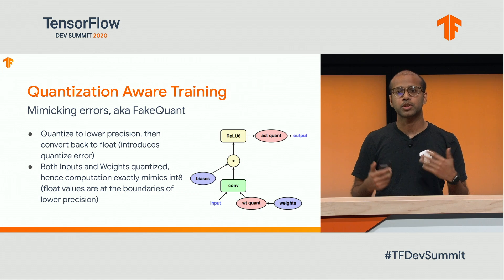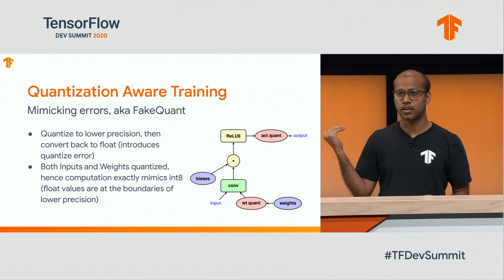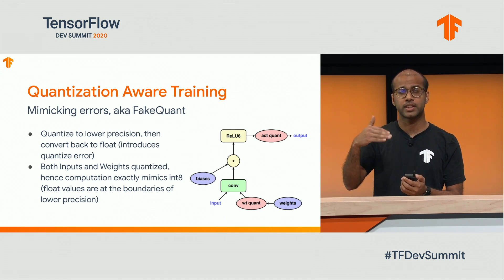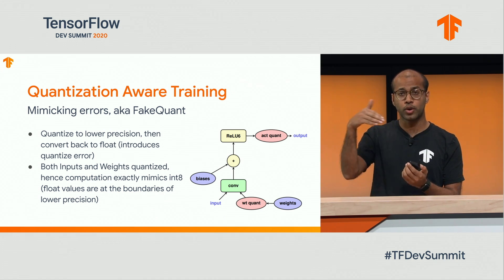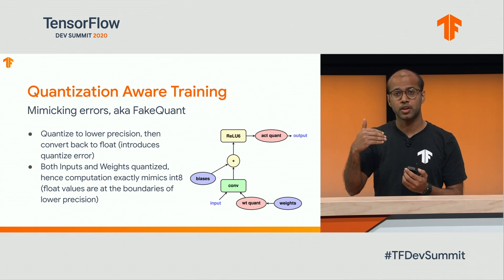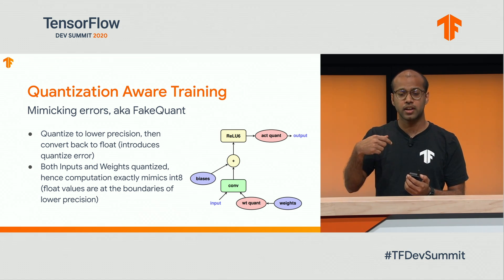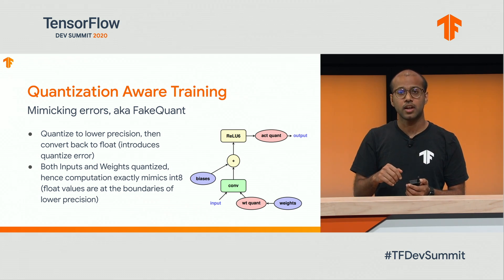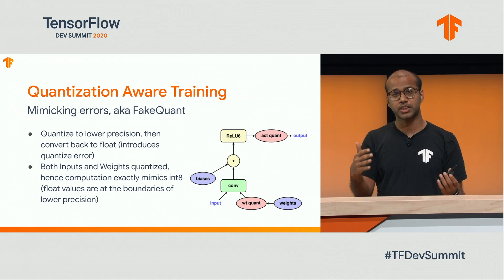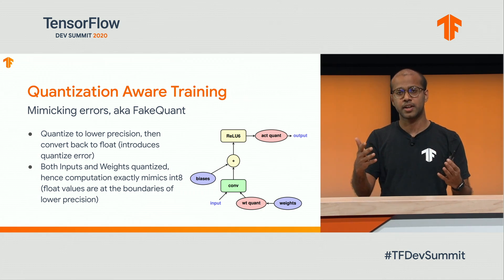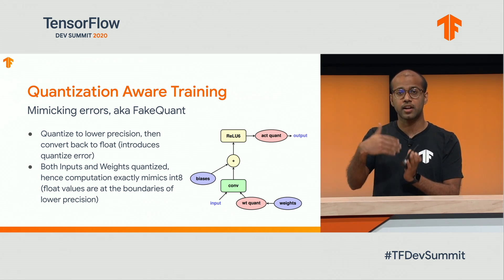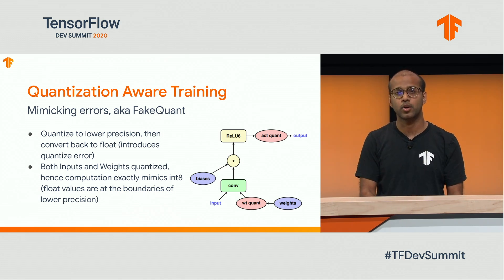For example, when it comes to mimicking errors, as you can see in the graph, you go from weights to lower precision — from floating point down to int8 and then back up to floating point — mimicking what happens during inference when executing at lower precision. Then you do your computation. Because both inputs and weights are at int8 and the losses have been introduced, the computation happens correctly. But after the computation, you add another fake quantization operation to drop back to lower precision.